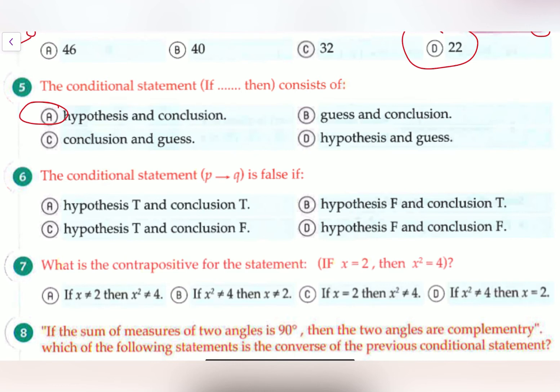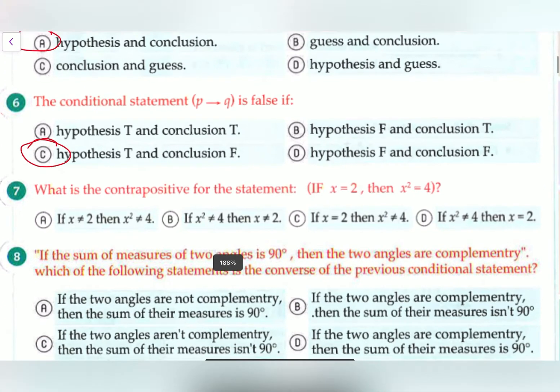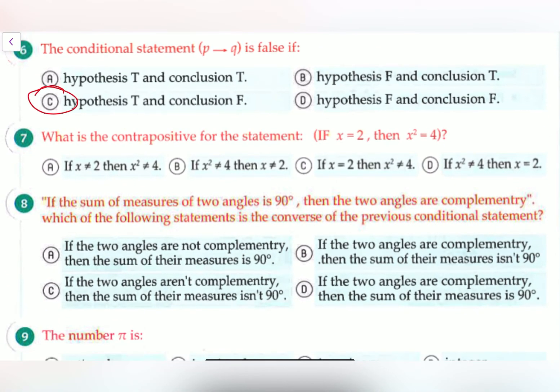Again, here we have a definition. It says the conditional statement P to Q is false if the hypothesis is true and the conclusion is false. We know that this is simply just the definition. So it says what is the contrapositive for the statement? So the statement is if x equals 2, then x squared is equal to 4. What is the contrapositive? And what is contrapositive? Contrapositive is basically when we replace the hypothesis with the conclusion and then we just deny both of them.